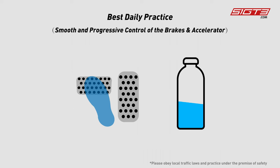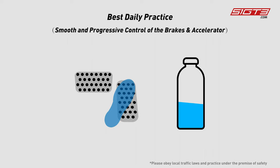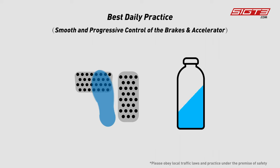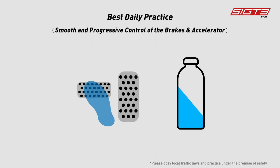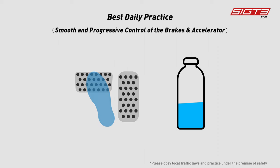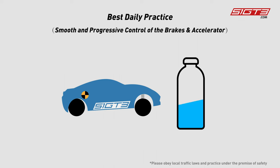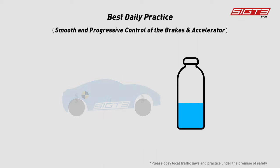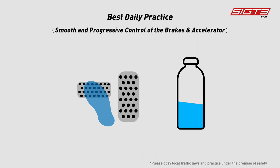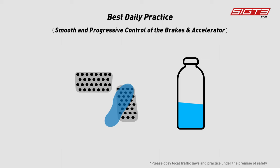Also try to control the brakes and accelerator as smoothly as possible while waiting at traffic lights. Releasing the brakes or stepping on the accelerator too quickly will cause the fluid level to fluctuate strongly, and the body will be accompanied by a noticeable nod and lift. Through continuous practice, when braking and starting at the traffic light, control the fluctuation of the liquid level as small as possible so that there will be almost no nod or lift.